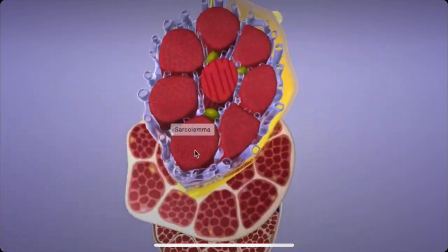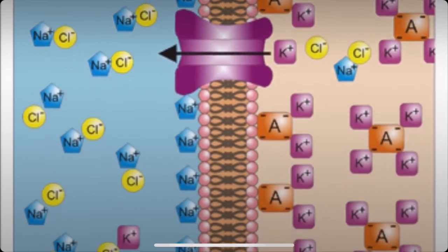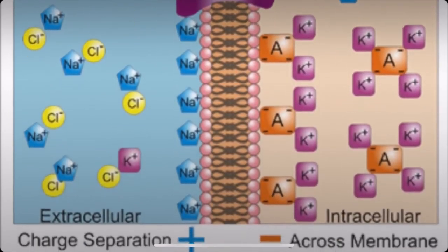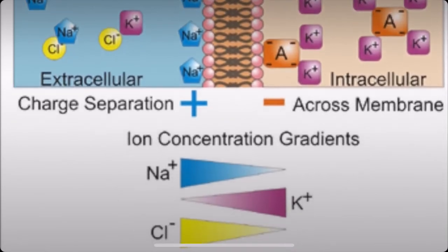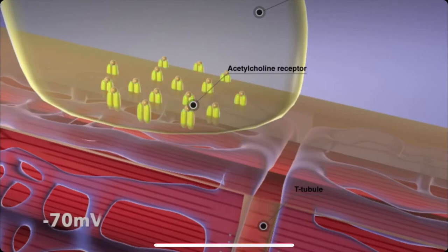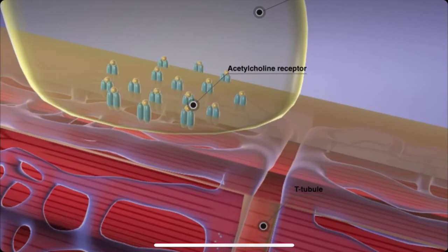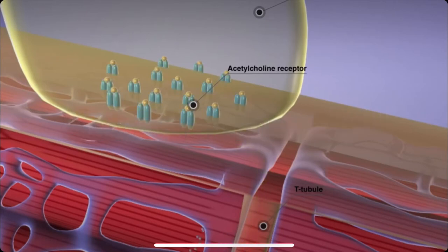The sarcolemma maintains a membrane potential, or electric potential, between the inside and outside of the muscle cells, which is key to muscle contraction. After acetylcholine attaches to these receptor sites, the membrane goes from negative 70 millivolts, its resting potential, to negative 55 millivolts, generating an action potential that travels down the sarcolemma into the transverse tubule.